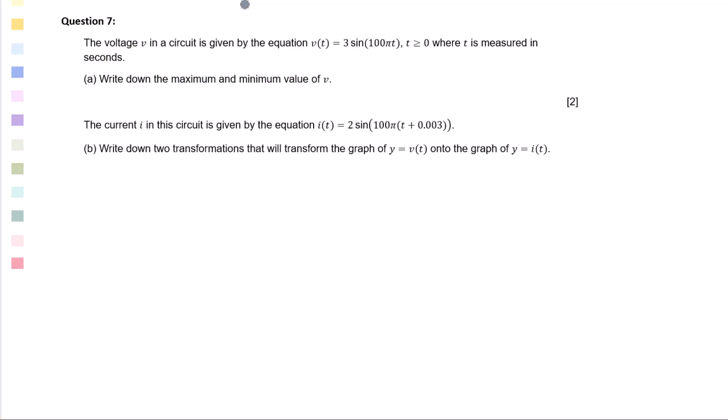Question 7. The voltage V in a circuit is given by equation V(t) = 3sin(100πt), t ≥ 0, where t is measured in seconds.